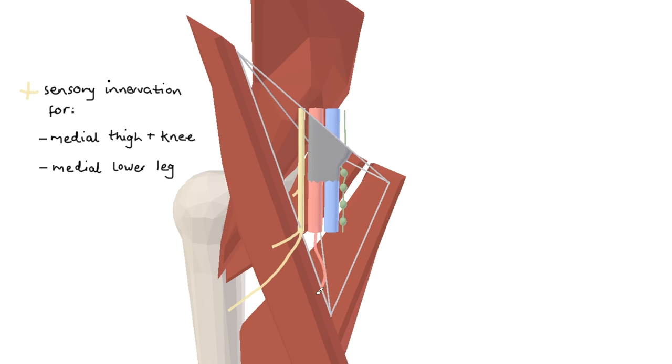The femoral artery and vein slink down together along the bed of adductor longus and magnus. Once they're past the border of sartorius, they're out of the femoral triangle and into the adductor canal.